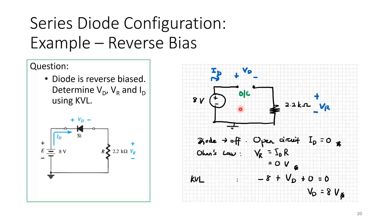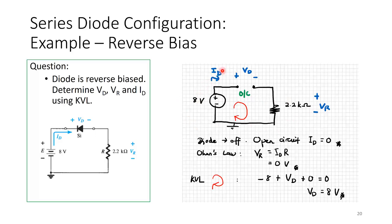Doing KVL: minus 8 plus VD plus VR equals 0. Since VR is 0, VD equals 8 volts. So the voltage across the diode is 8 volts and the current through it is 0 because it is an open circuit.